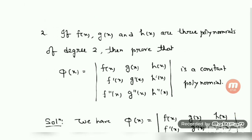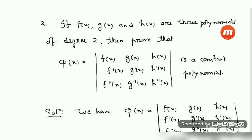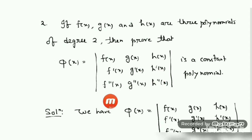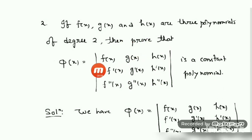Let us do one more question. Question number 2: if f(x), g(x), and h(x) are polynomials of degree 2, then prove that φ(x) — the determinant with rows f(x), g(x), h(x); f'(x), g'(x), h'(x); and f''(x), g''(x), h''(x) — is a constant polynomial. We can conclude φ(x) is a constant polynomial if its differentiation value equals 0, because d/dx of a constant is 0. So we are going to find out the differentiation of φ(x).